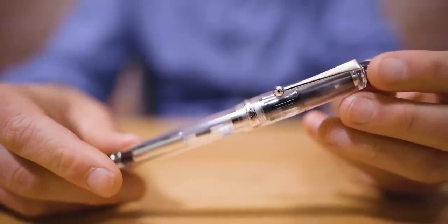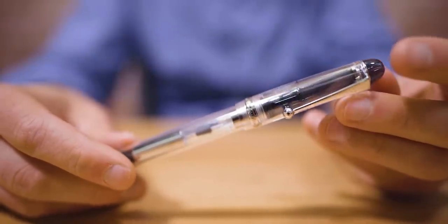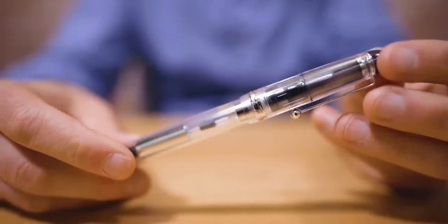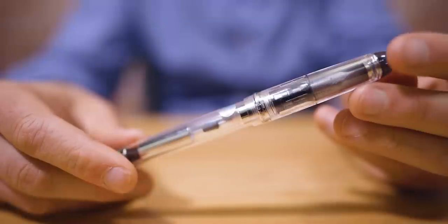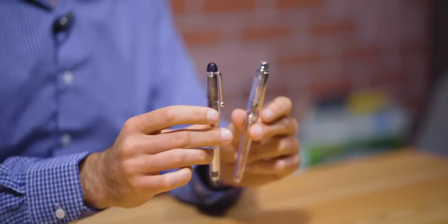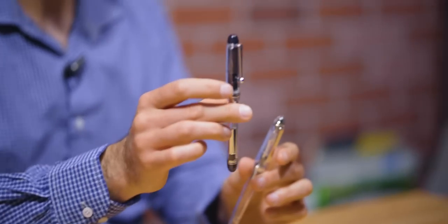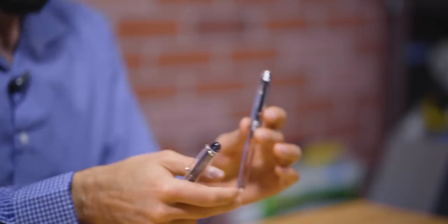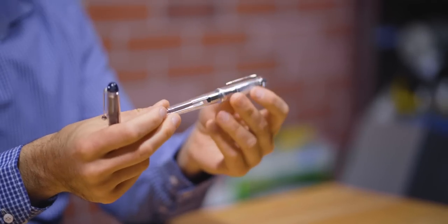We have here the Custom 74, which is made by Pilot. And although this is not completely clear in terms of a demonstrator, most parts are clear on this demonstrator. And both pens are Japanese-made. Very similar type of shape, where you have like a classic cigar shape. The Custom 74 is a little bit more cylindrical, whereas you get more of the cigar-type shape, I think, with the 3776.